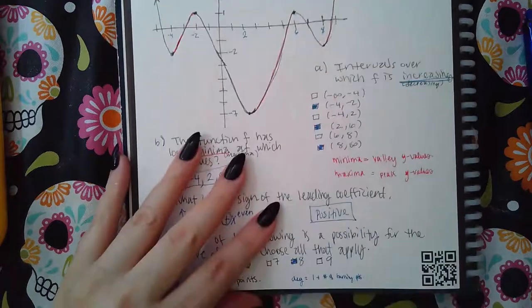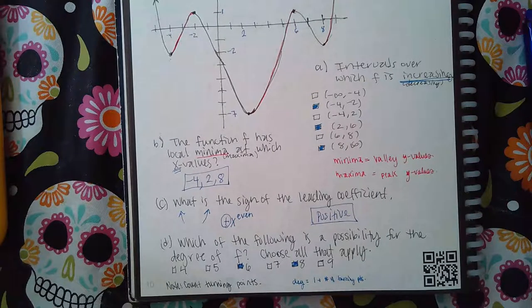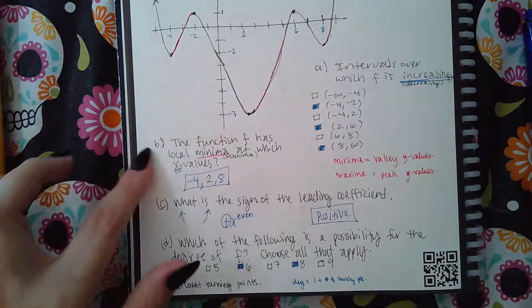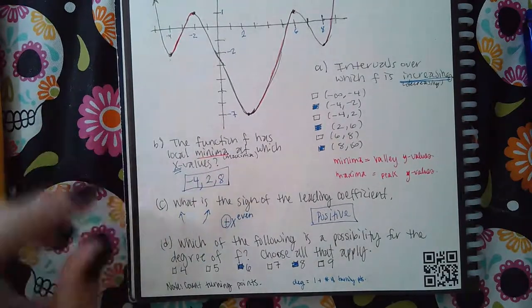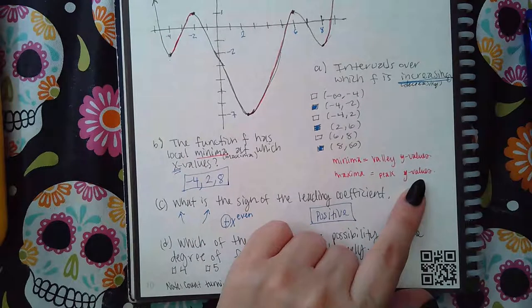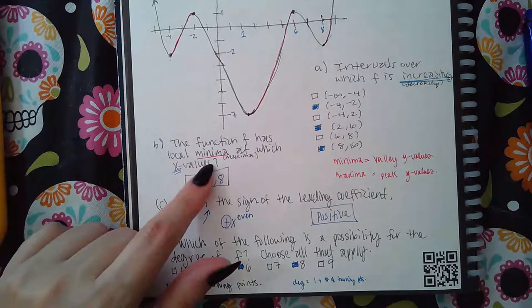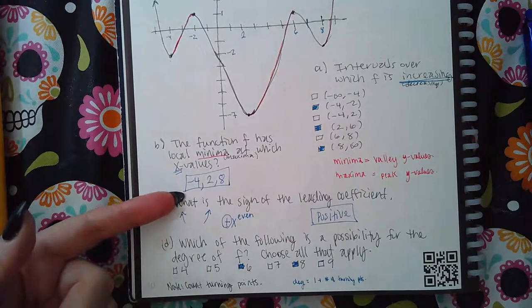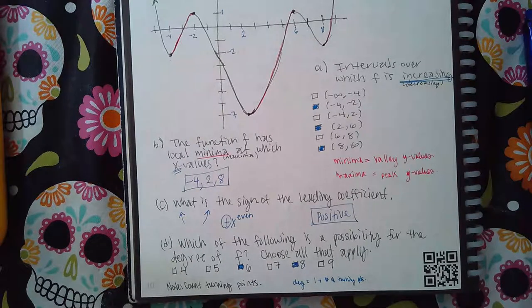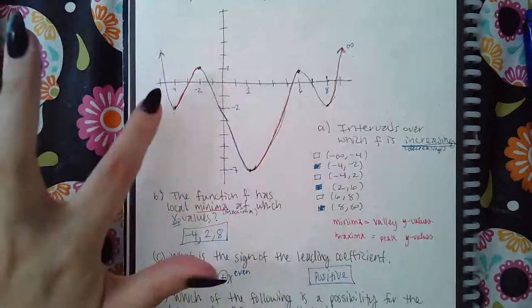Part B says the function f has local minima at which x-values. I just want you to be careful because if they just say what is the local minima or what is the local maxima of f, if that's how they phrase the question, then they're asking you for the y-values. But if they phrase the question as the function has local maxima at which x-values, then you need to enter the x-values where the peak values occur. Depending on the problem, it will toggle between the two. Some problems may ask you for the minima, some problems may ask you for the maxima. Minimas are all the valleys in the graph, maximas are all the peaks in the graphs.